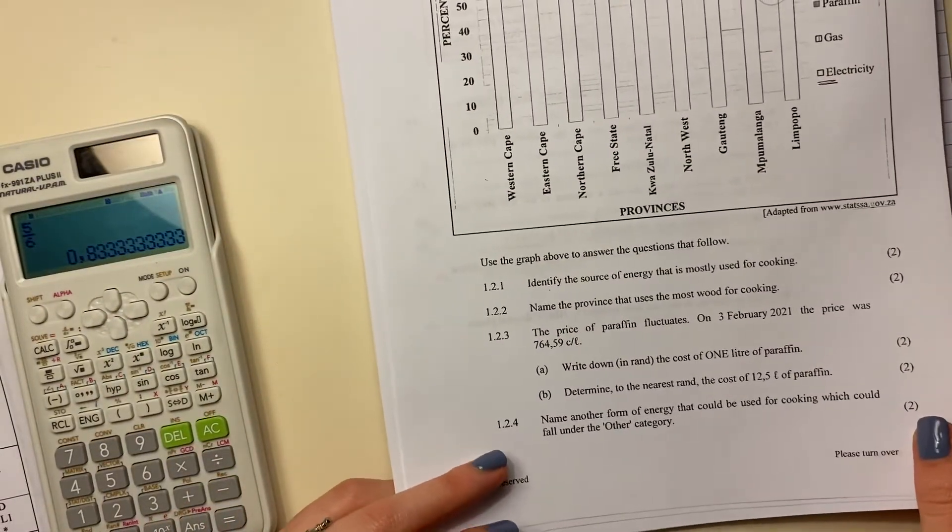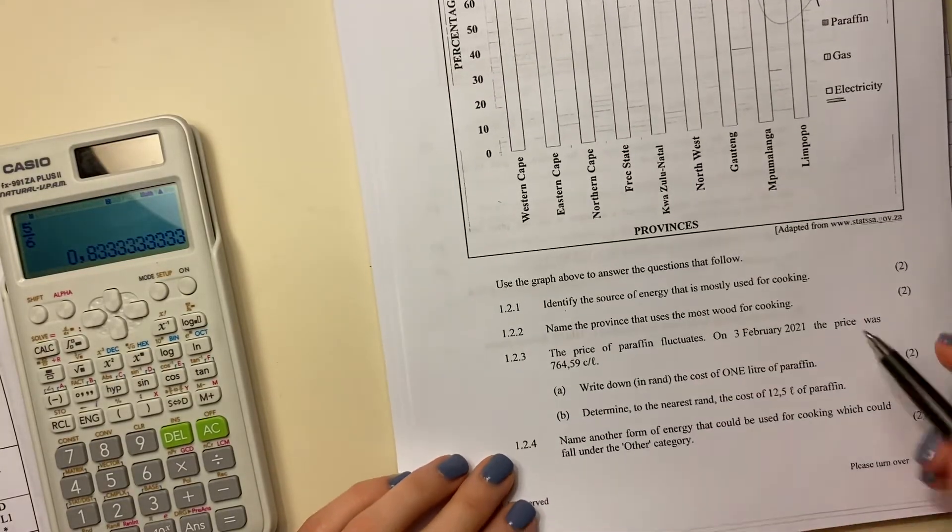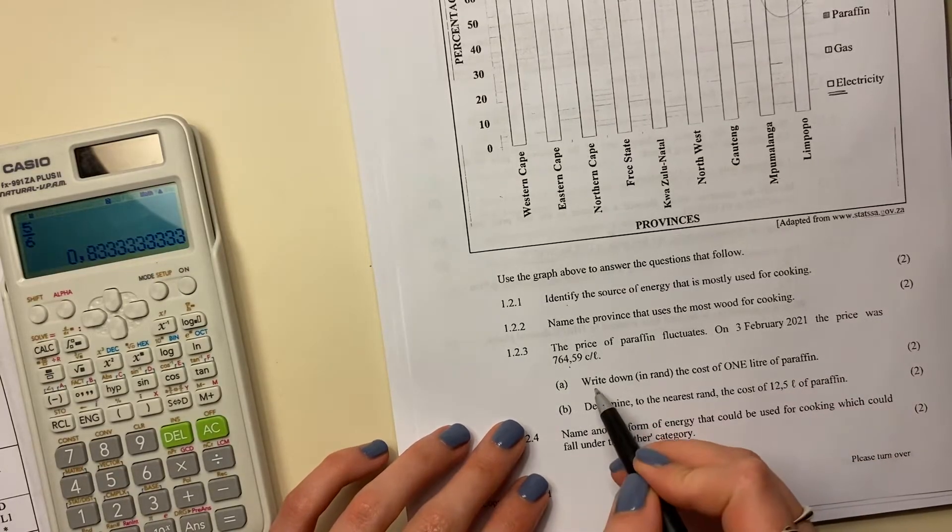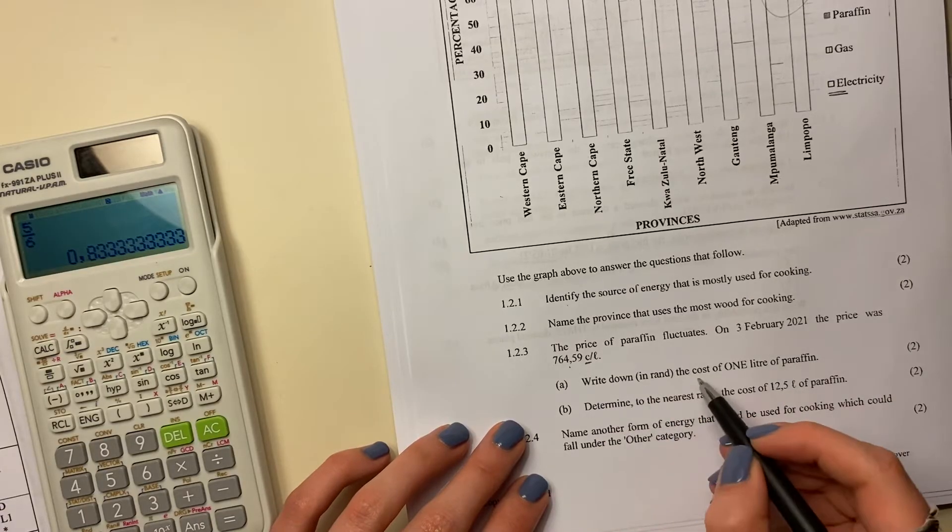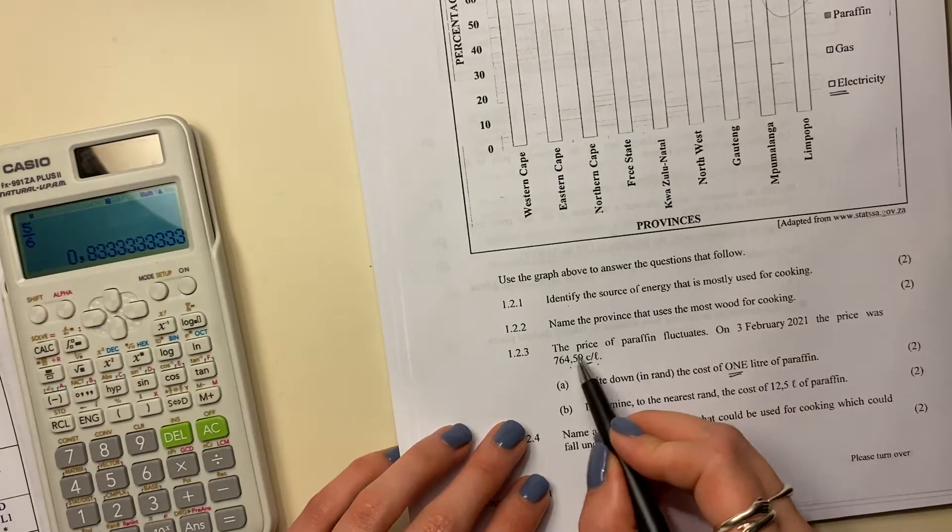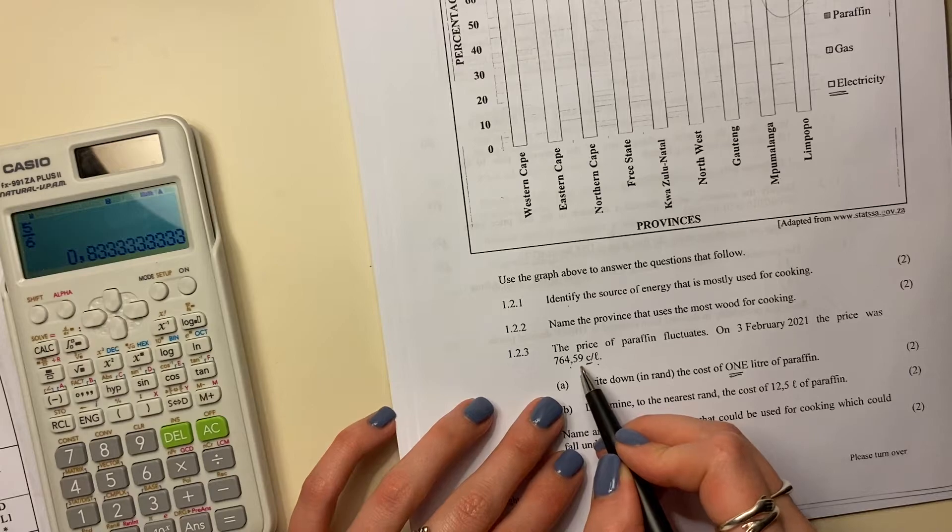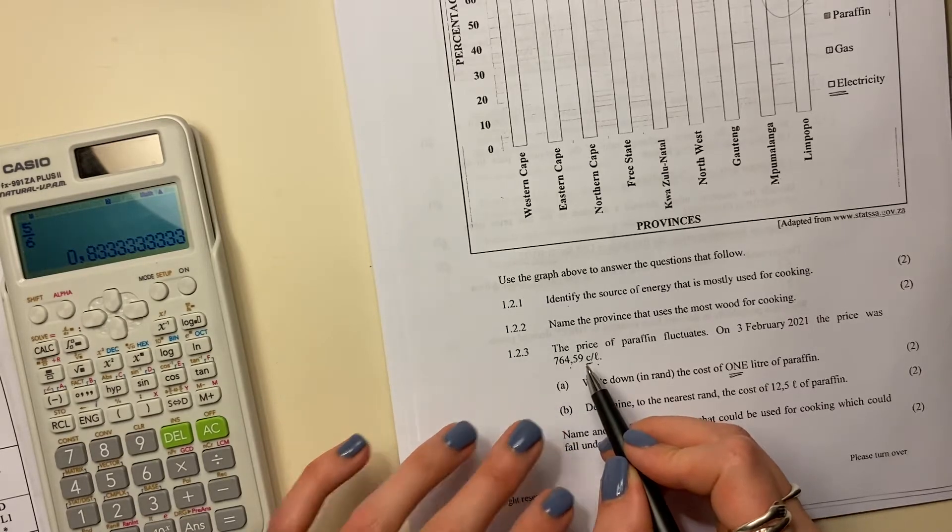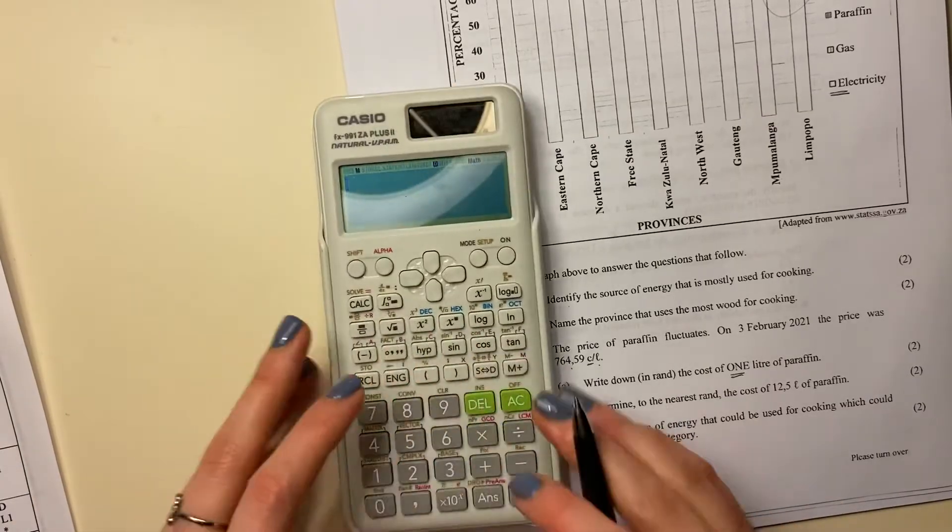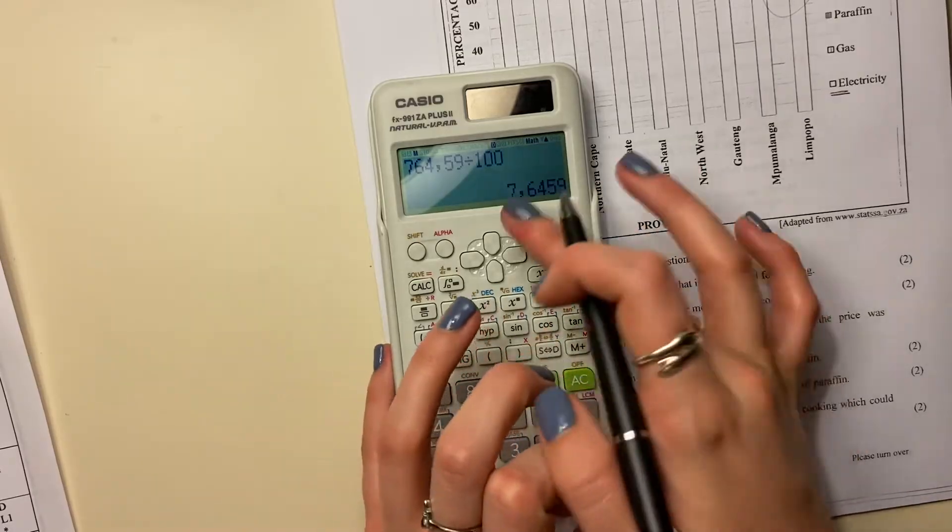Right, then there's the price of paraffin fluctuates, so basically it changes. On 3 February 2021, the price was this much. And that's cents. That's what that little cent means. Write down in rands the cost of one liter. So I think each liter is this many cents. Now, how do we convert cents into rands? We divide by 100 because there's 100 cents in a rand. So we're going to say, let me just show you here, 764.59. And you're going to divide it by 100. And that'll give you an answer in rands.